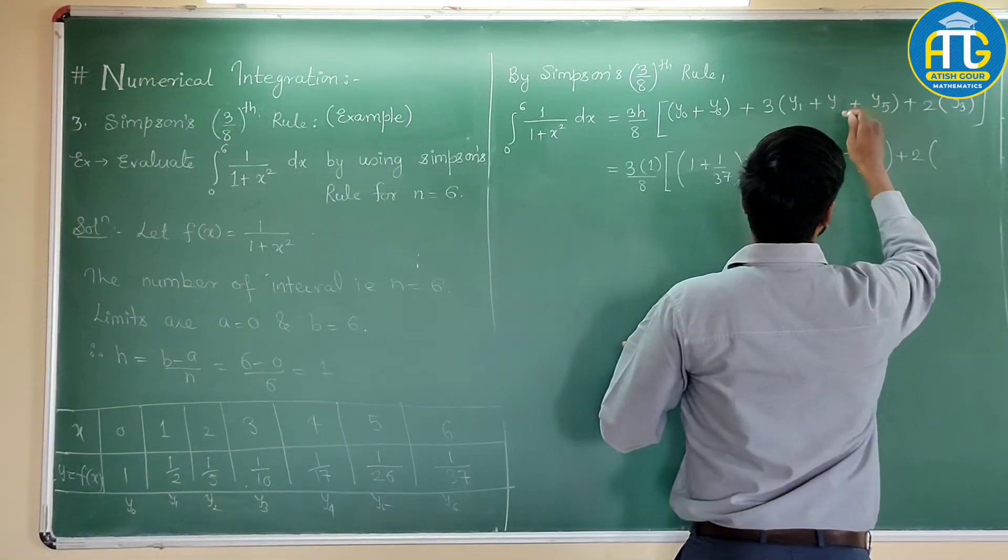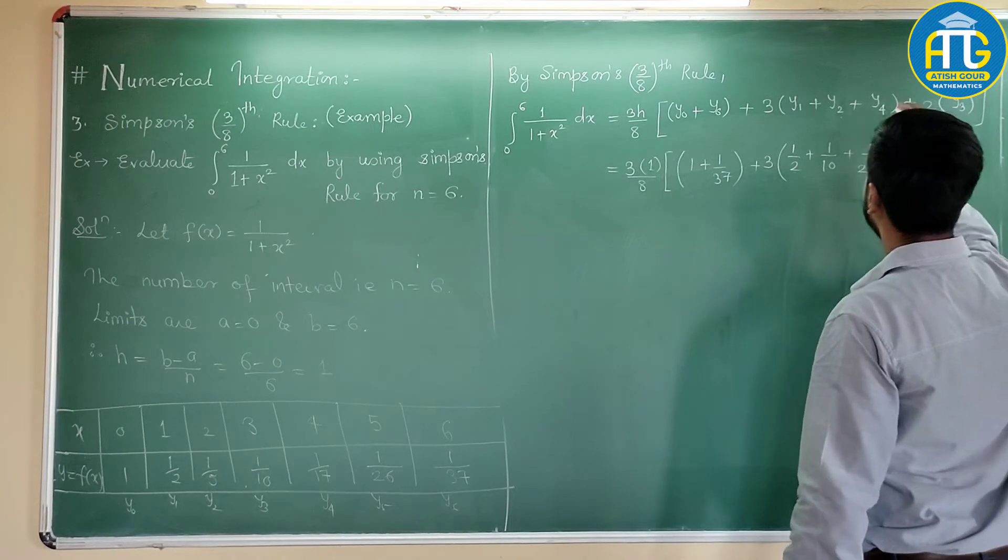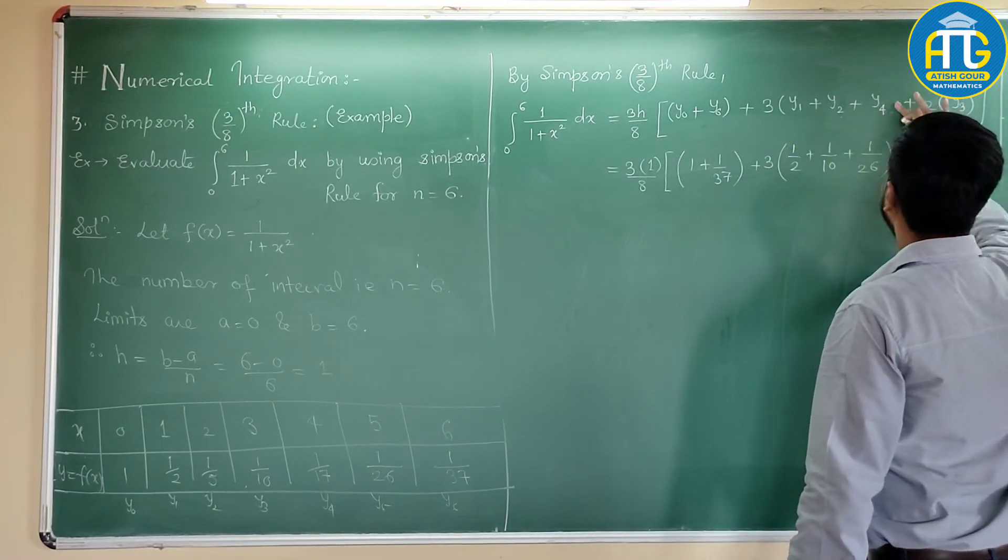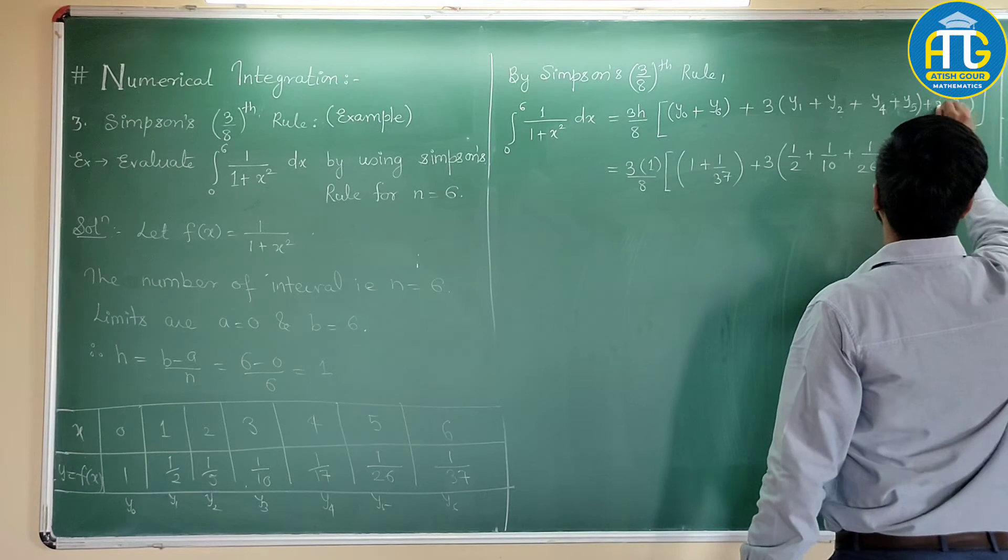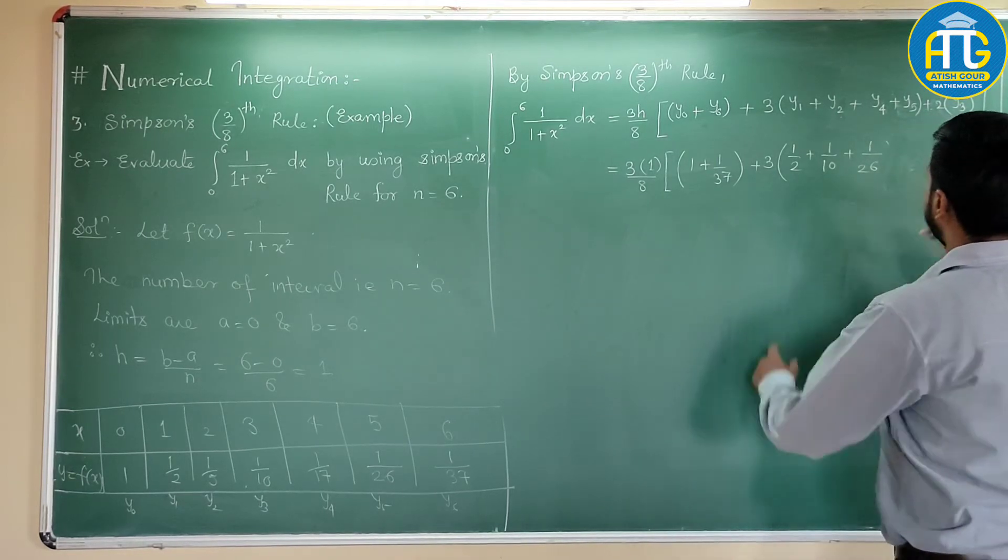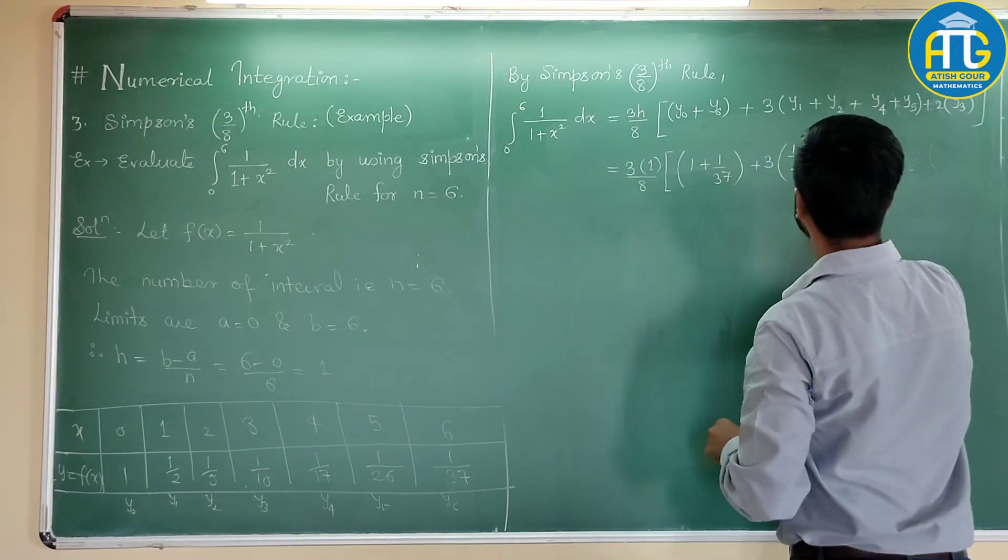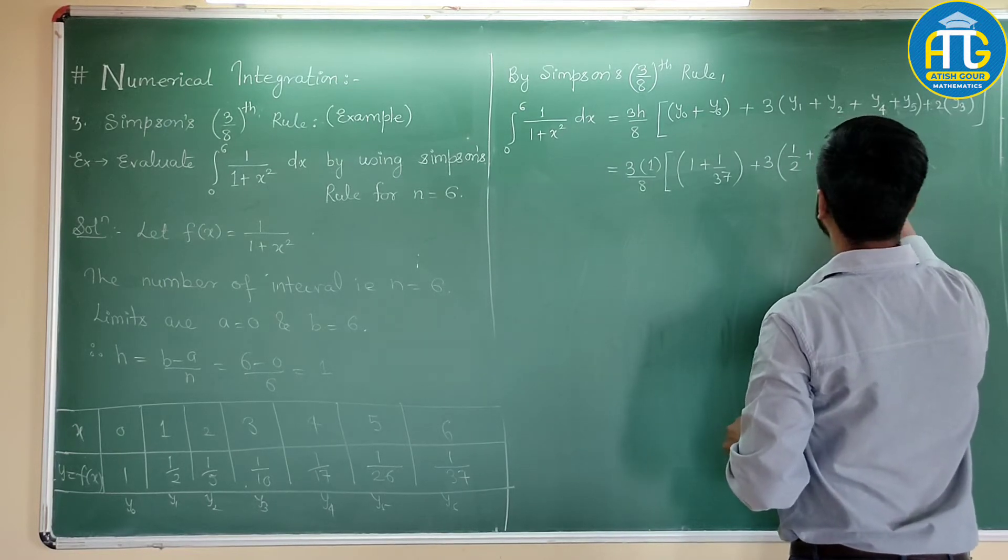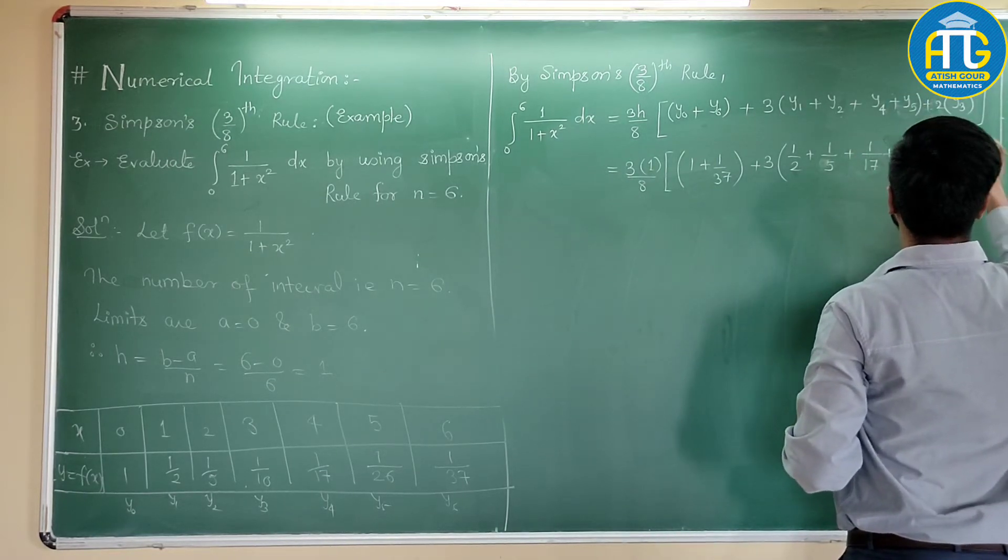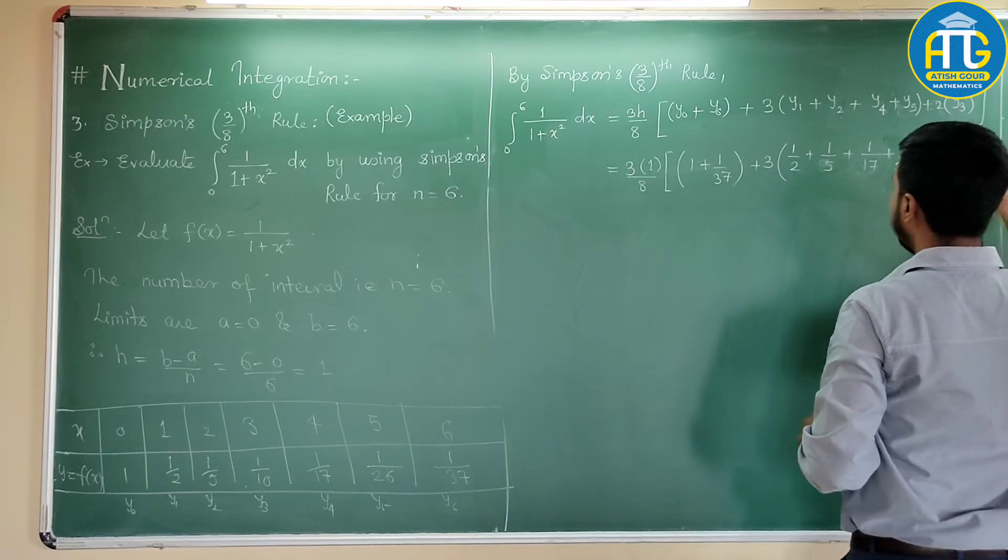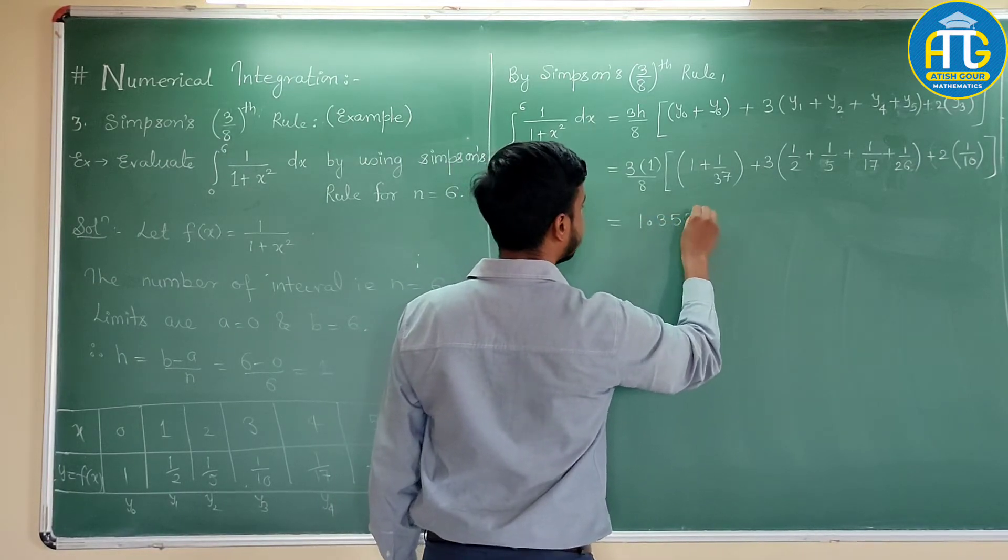So, this is y1, y2, y4, and y5 times the suffixes which are not multiple of 3. So, 1, 2, 4 and 5 would be there plus 2 times y3. So, this is 1 by 2. Then y2 is, sorry, 1 by 5. Then we have 1 by 17 plus 1 by 26 plus 2 times 1 by 10. Now, you solve these values. When you solve these values, you will get 1.3571.